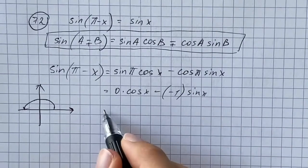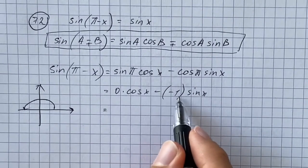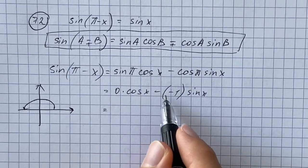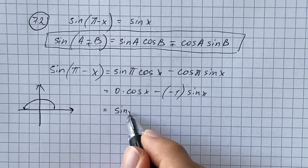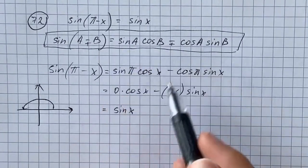So we're left with zero minus negative one, which gives us positive one times sine of x. It's going to be just sine of x. So we've proved our identity.